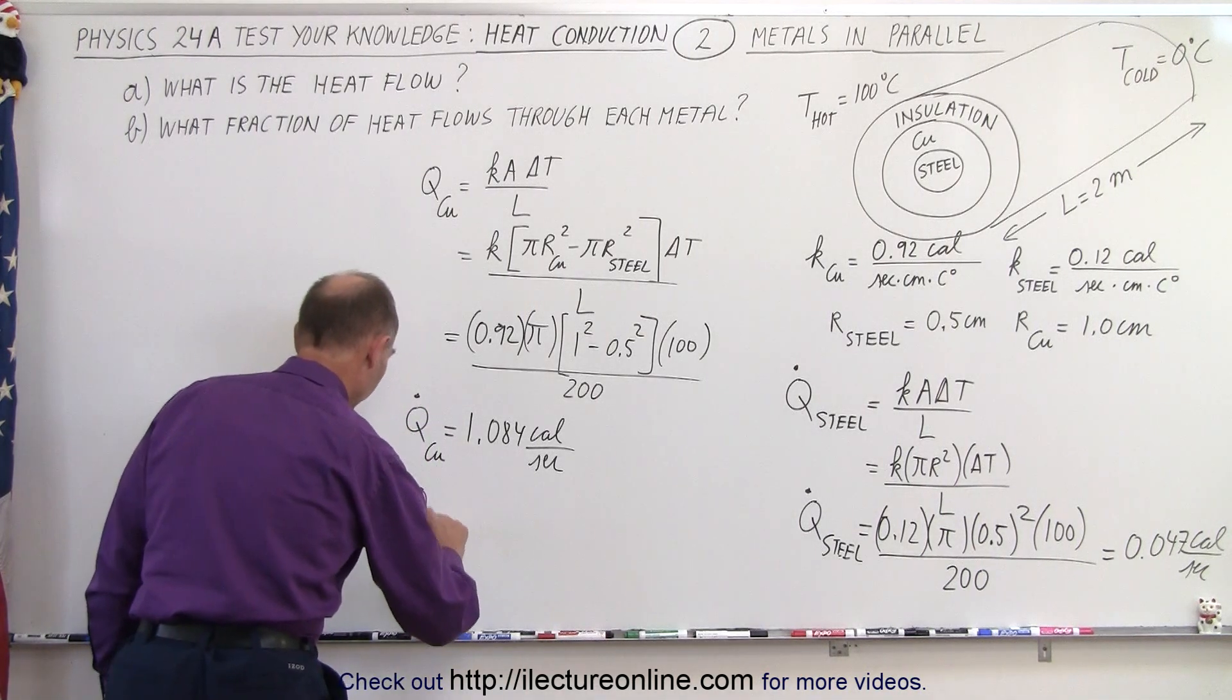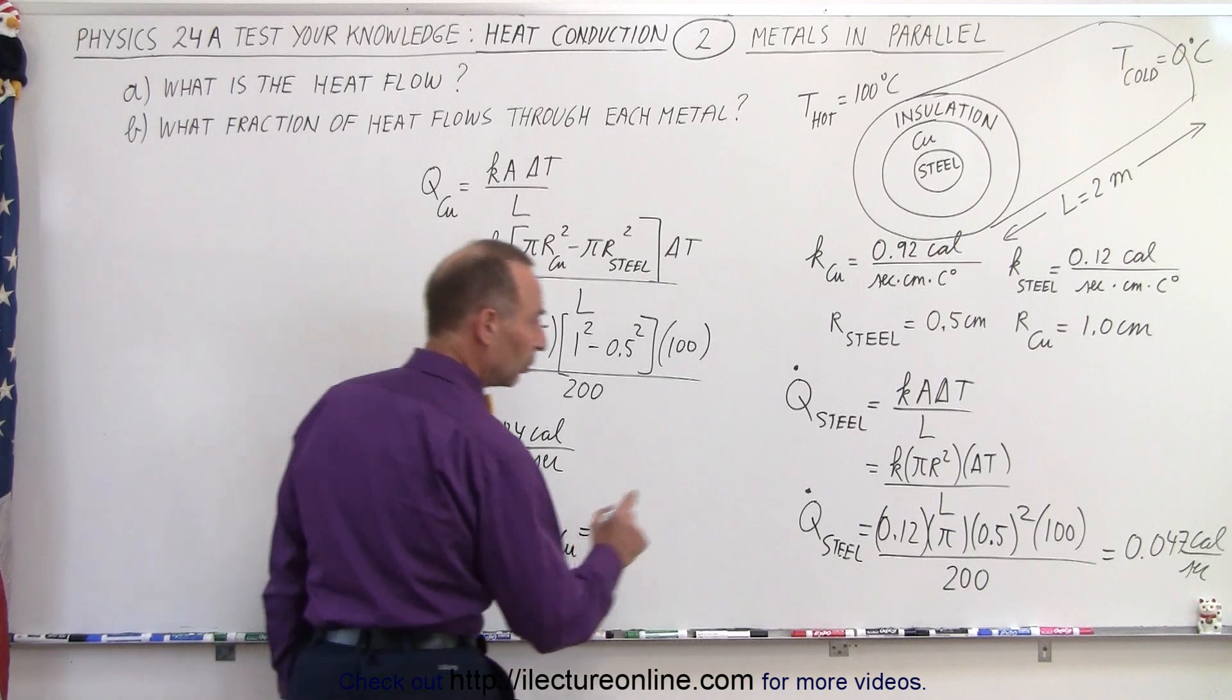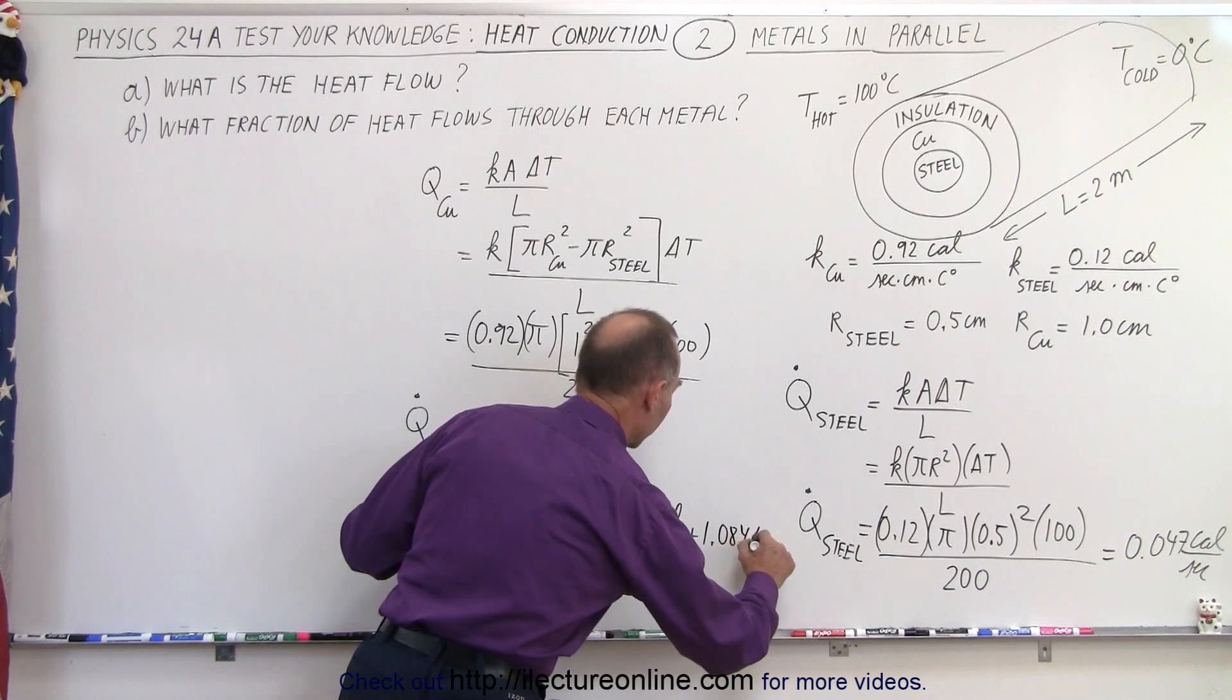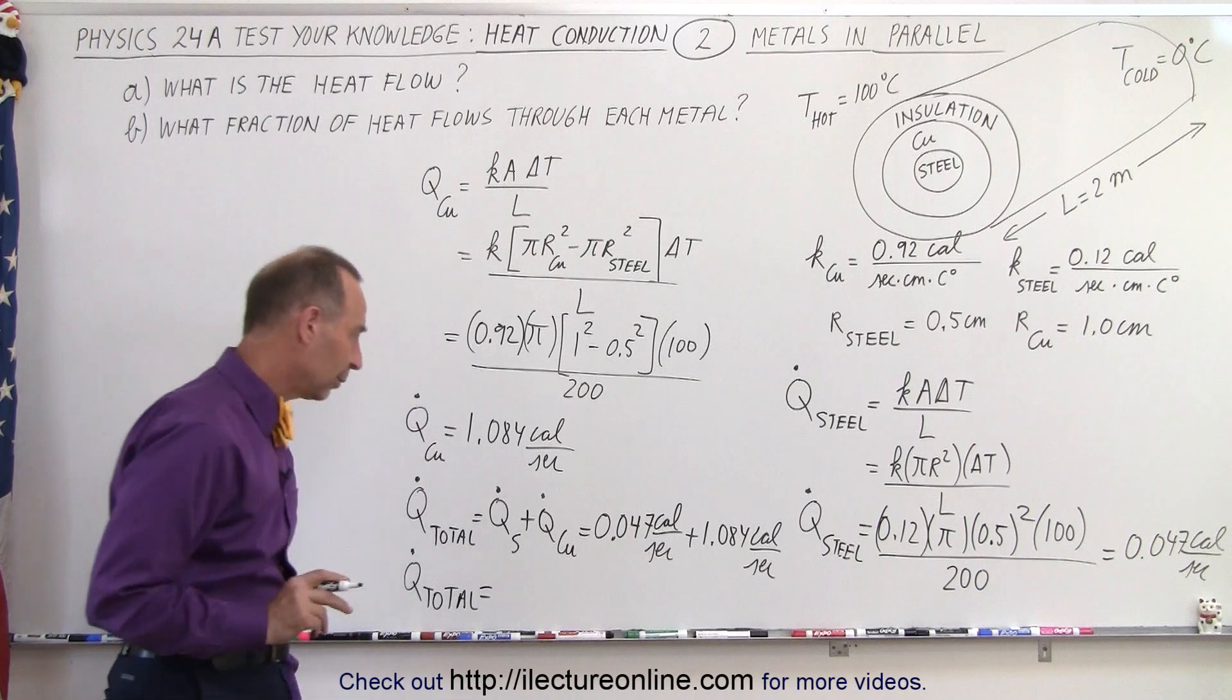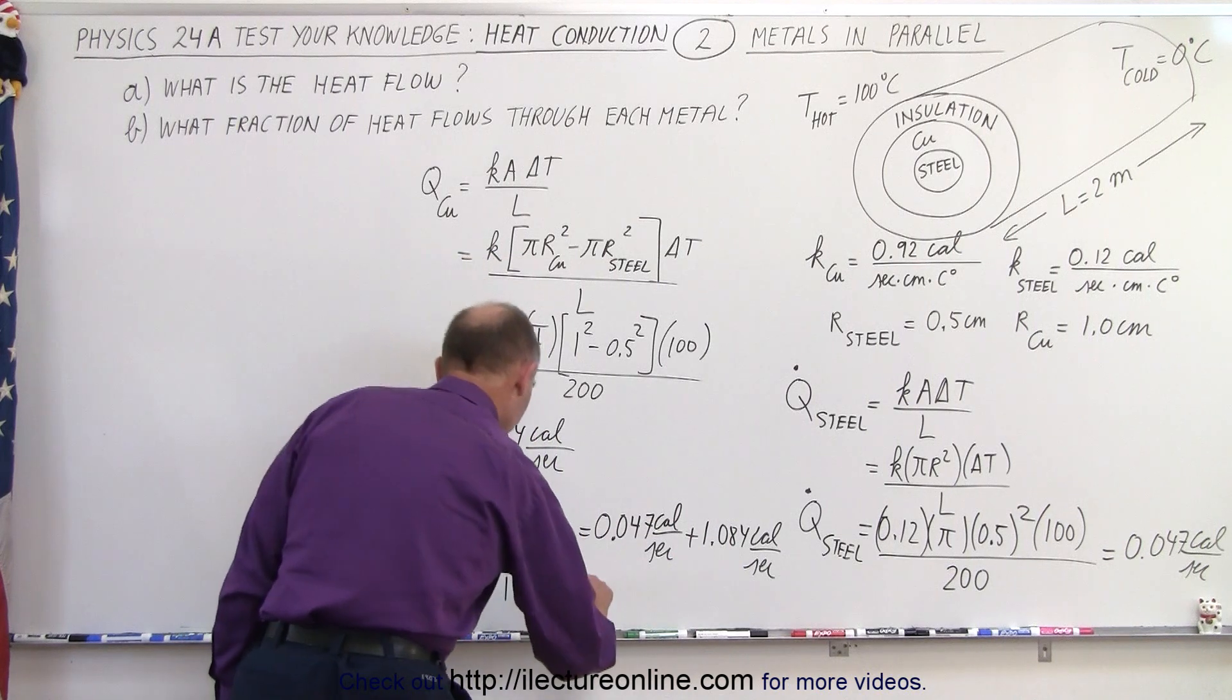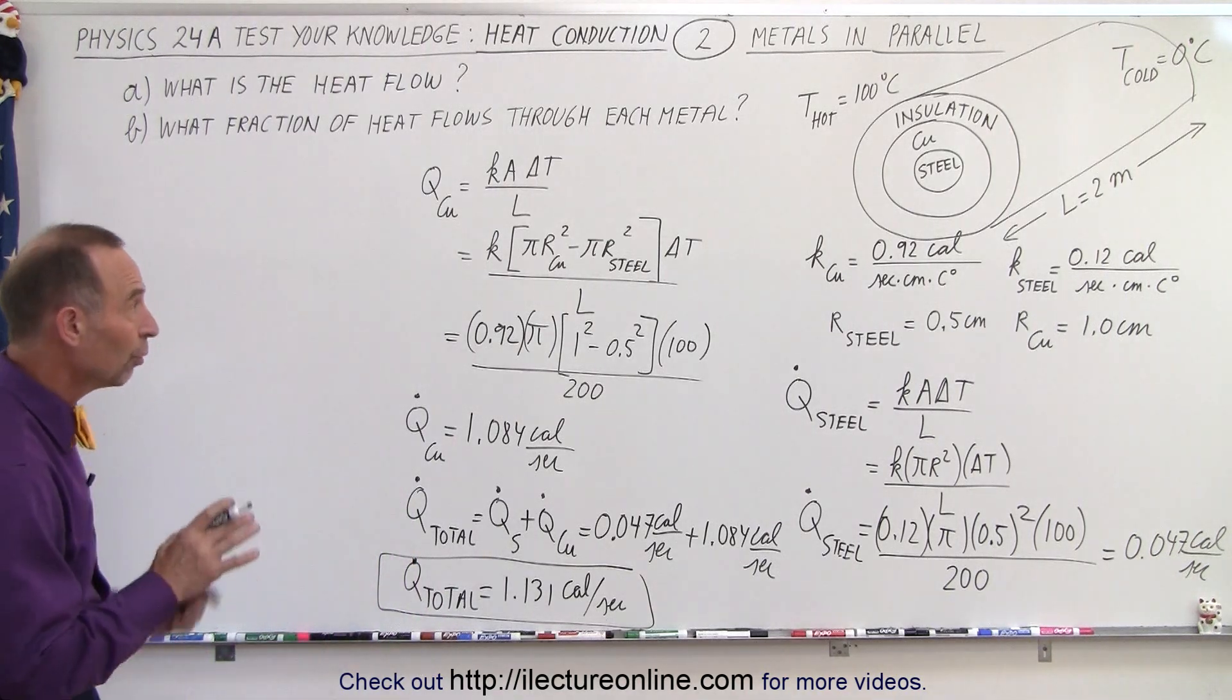So total heat flow, q total, q dot total is equal to the q dot of the steel plus the q dot of the copper, which is equal to 0.034 calories per second. And so when we combine those two, the q dot total, the total heat transfer through there is equal to, let's see here, that's 1.131 I believe, that would be 1.1, that would be 3.1, yes, calories per second, and that would be long here, that will be the total heat flow, q dot right there, the total heat flow through both the copper and the steel combined.